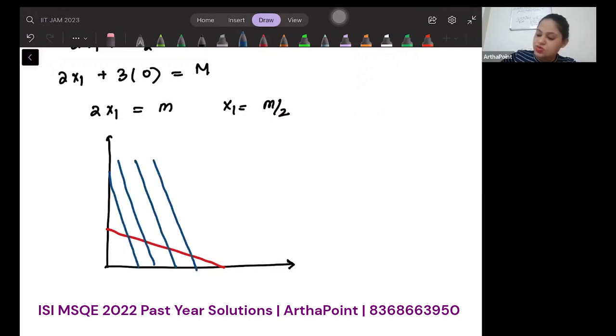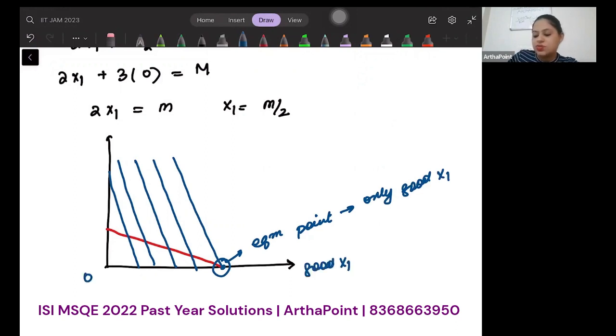And my aim is to reach the highest IC possible. So I will be reaching this point. This will be my equilibrium point. And here I will be consuming only good x1. This is good x1, and this is good x2.